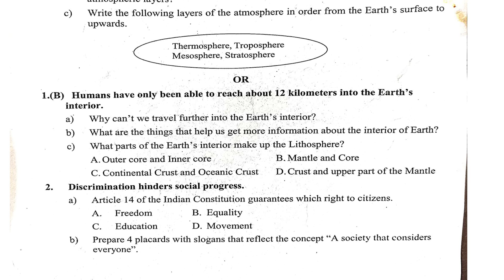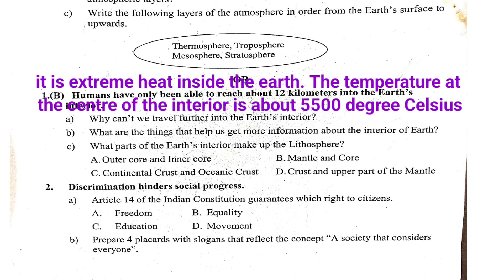Humans have only been able to reach about 12 km into the earth's interior. The answer is B — it is extreme heat inside the earth. The temperature at the center of the interior is about 5500°C.